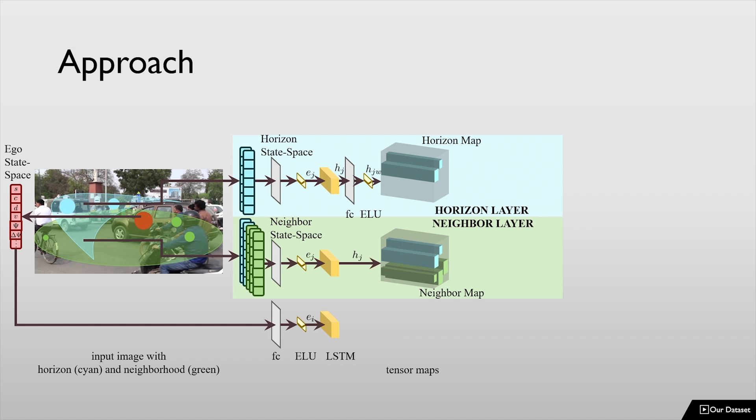Both these maps are then used as inputs to a convnet which is comprised of two convolutional operations followed by a max pool operation implemented in each layer.